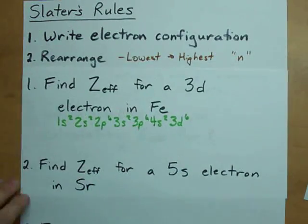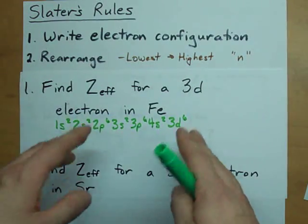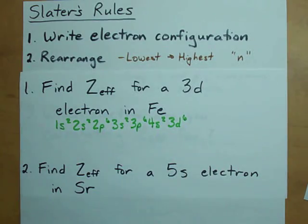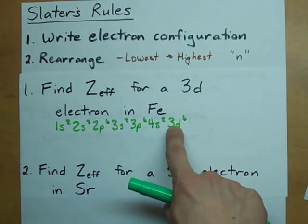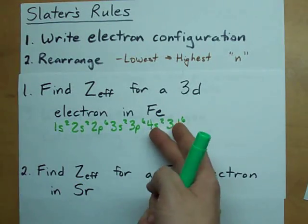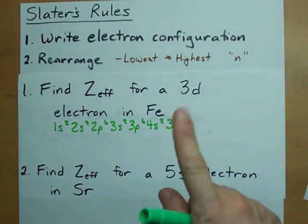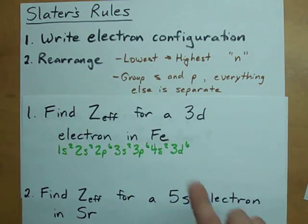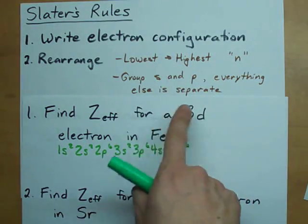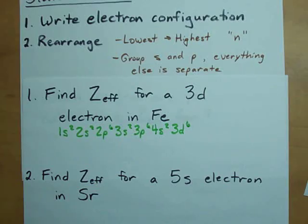Okay, step two. Rearrange all of these from the highest to lowest n. Notice that this four came before this three. We're going to switch those back only for the purposes of Slater's rules. And we're going to group s and p's together and everything else is going to stay separate. Here's what I mean.